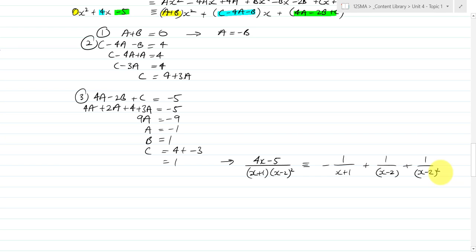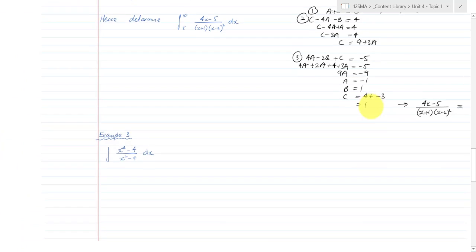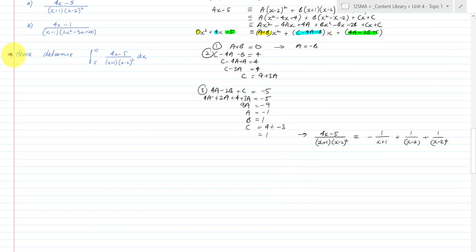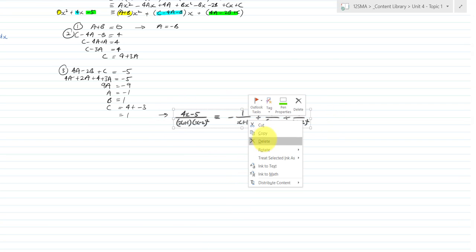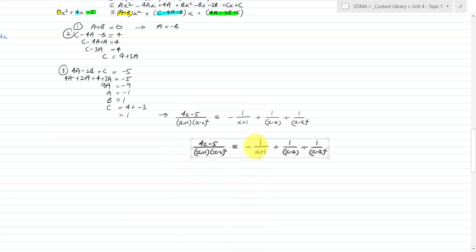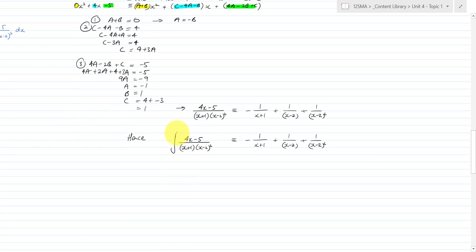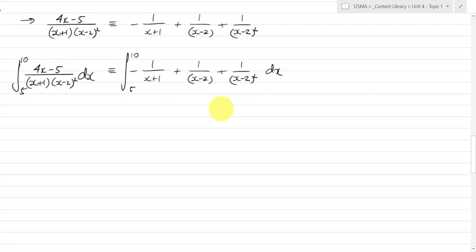Now I could obviously integrate that as well, which I'll do now before moving to part B. The 'hence' part asks us to integrate this expression, so taking the partial fraction result, the integral of (4x − 5) / ((x + 1)(x − 2)²) between 5 and 10 dx is equivalent to the integral of −1/(x + 1) + 1/(x − 2) + 1/(x − 2)² between 5 and 10 dx.